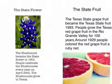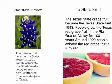The state flower. The bluebonnet became the state flower in 1901. The people celebrate the bluebonnets every year on April 24th. The bluebonnets grow in Texas.